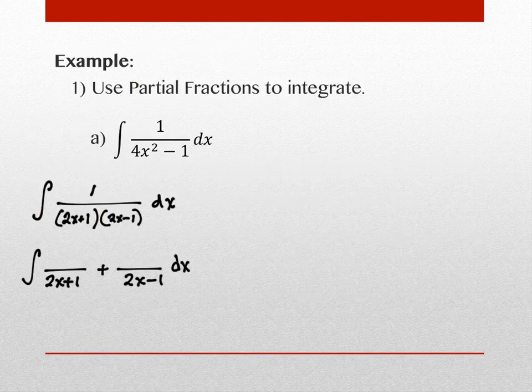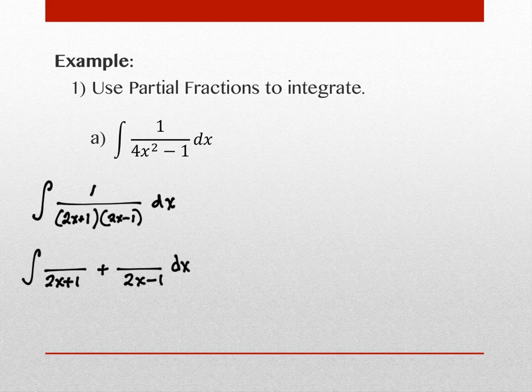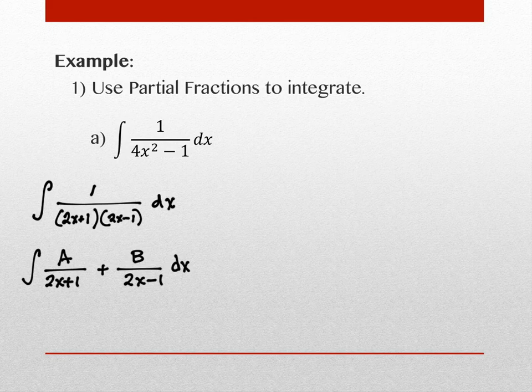The degree of each denominator is one, so one less is zero — degree zero means a constant. I have linear denominators, so I'm going to have a constant numerator. Constants we don't know, we let be a letter — we'll use A and B. The convention is to use capital letters and go down the alphabet: if we need another one, we use C, then D, and so on.